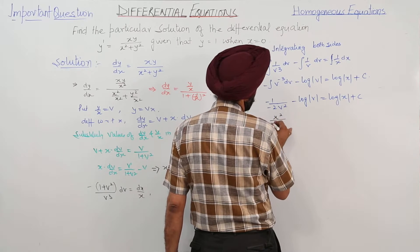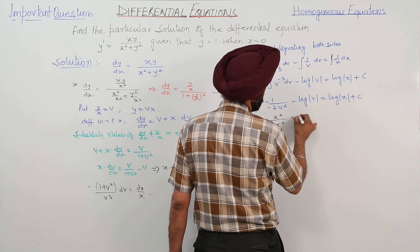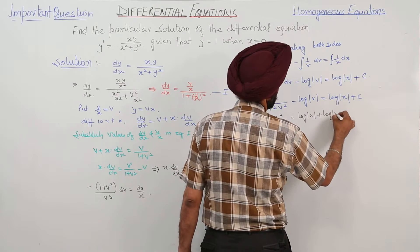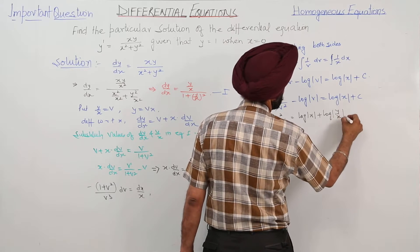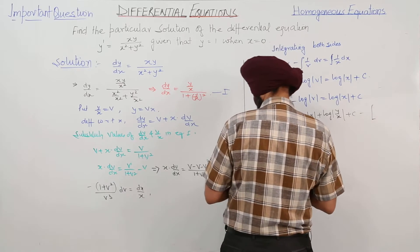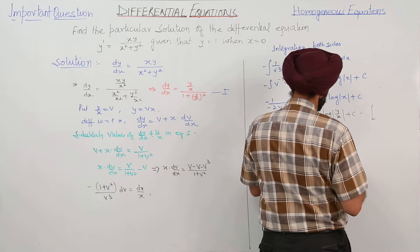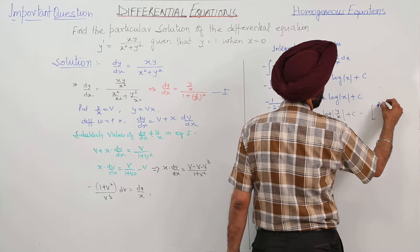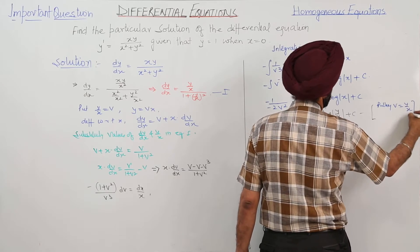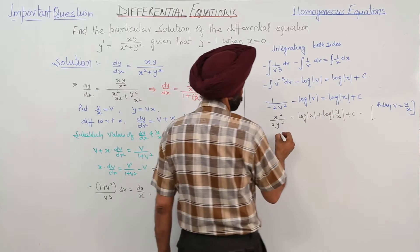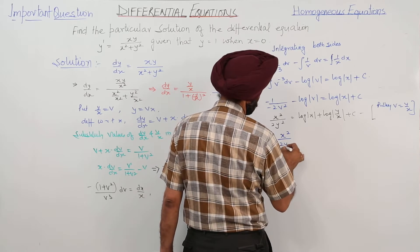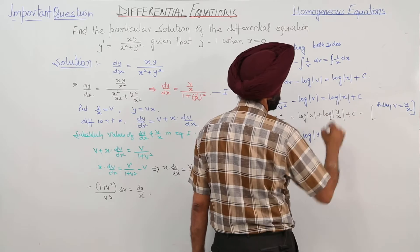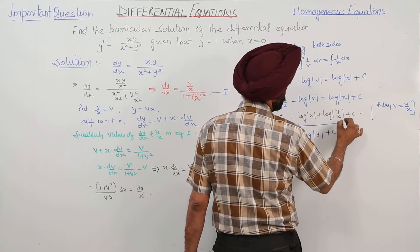Substituting back v = y/x: x²/(2y²) = log|x| + log|y/x| + C, which simplifies to x²/(2y²) = log|y| + C, using the property of logarithms.